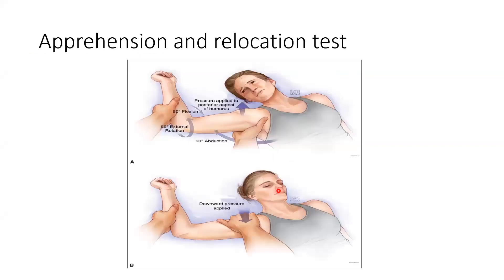The apprehension and relocation tests: abduct the arm with elbow flexed at 90 degrees, then externally rotate. It is positive when the patient shows apprehension on facial expression, feeling that the shoulder joint is dislocating. For the relocation test, you apply a downward posterior pressure and repeat the apprehension test. With the stabilizing downward pressure, the patient does not have any apprehension. This indicates anterior instability.